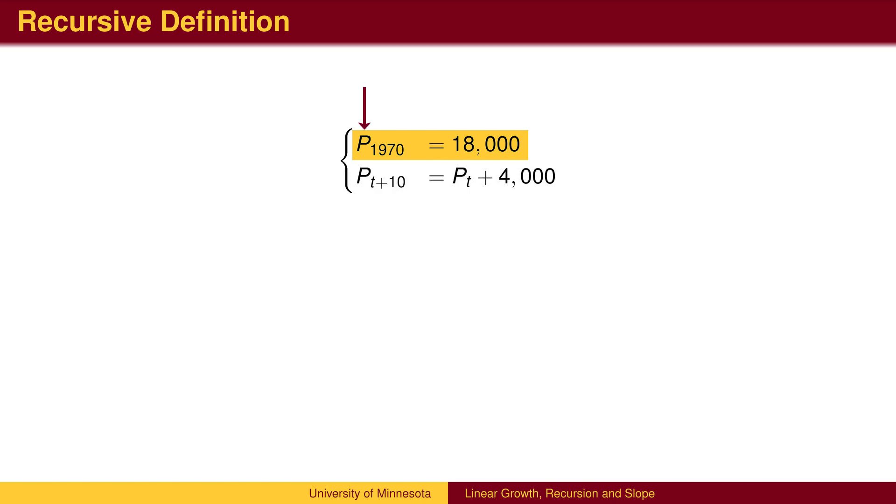Typically, the variable represents the quantity being measured. In this case, we use p for population.